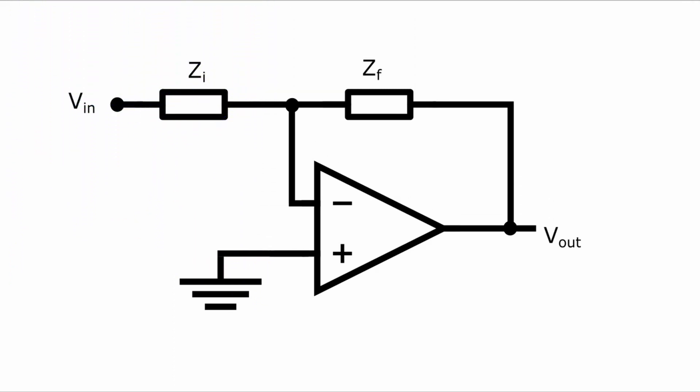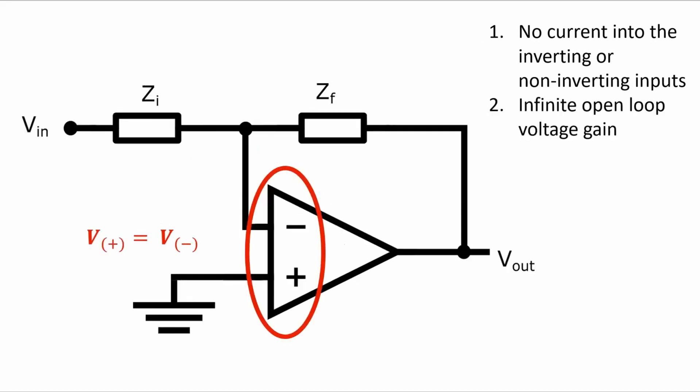And again for this analysis we are going to assume that this op amp is ideal, which means that no current goes into the inverting or non-inverting pins because the input impedance is infinite and the open loop gain is infinite, and so with the negative feedback the voltages at the inverting terminal and the non-inverting terminal are the same.